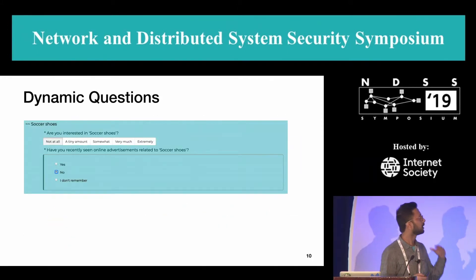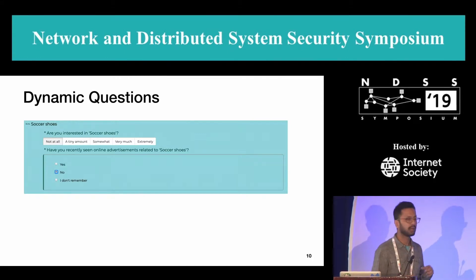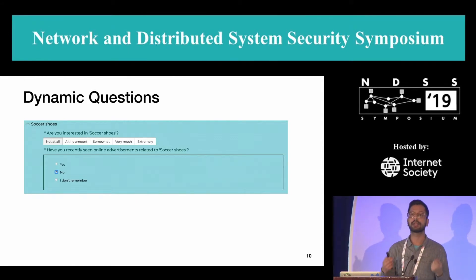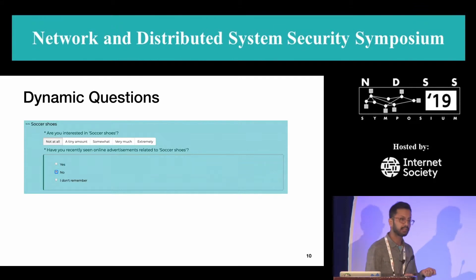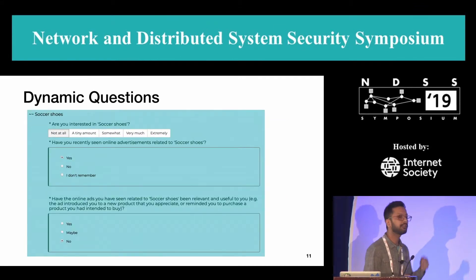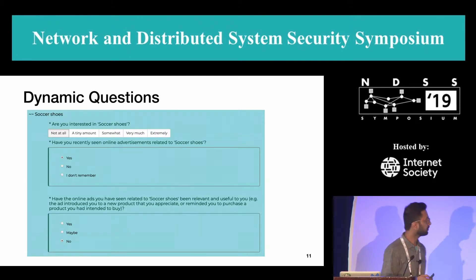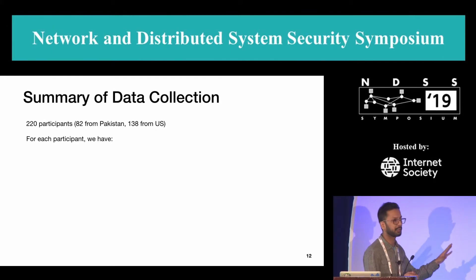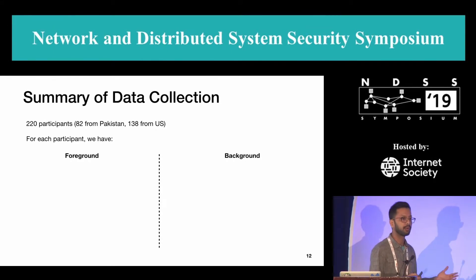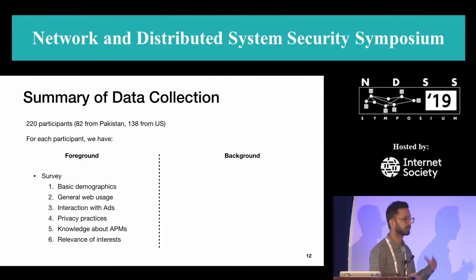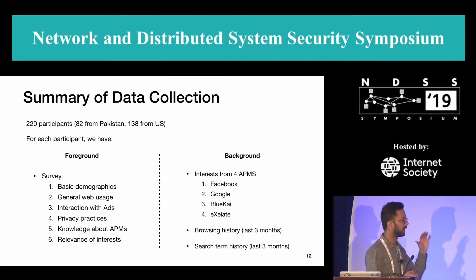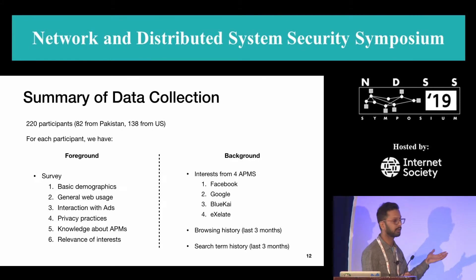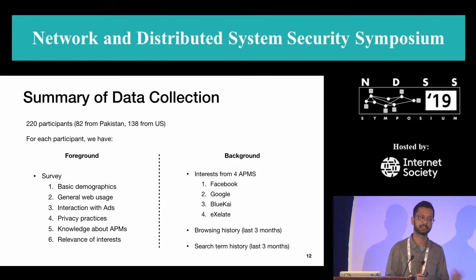In the dynamic part, let's say one randomly sampled interest was soccer shoes — we would ask the user, are you interested in soccer shoes? We would also ask whether they recently saw an advertisement related to that interest, and if yes, a follow-up: did you find that ad useful or relevant? So in summary, we collected data from 220 participants. In the foreground we have survey questions on demographics, general web usage, and interest relevance; in the background we collect interests from APMs like Facebook, Google, BlueKai, and Exelate, plus browsing and search history.